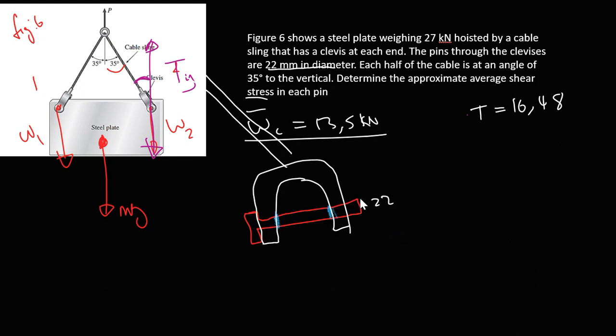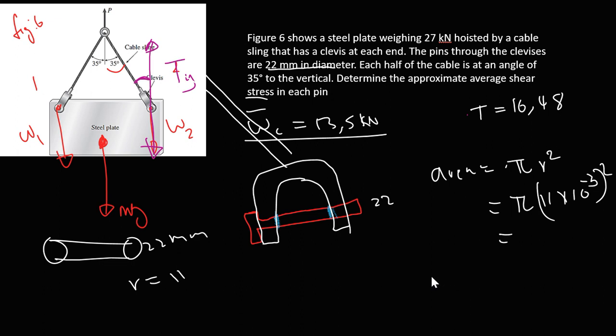We're given the diameter of the pin to be 22 millimeters. The pin looks like a bolt. I don't like working with diameters, I prefer radius. So I'll divide by 2 to get radius of 11 mm. Now I can calculate the area: A equals π r². So π times 11 mm, which is 11 times 10⁻³ meters, squared.